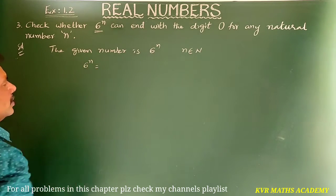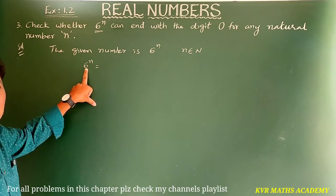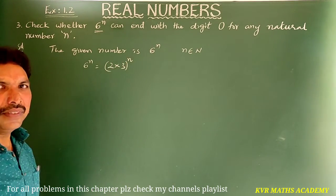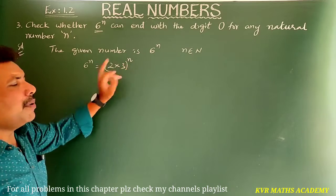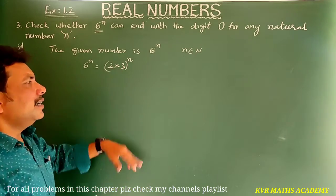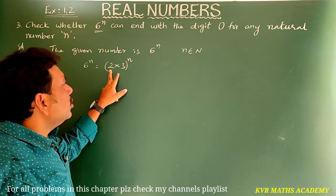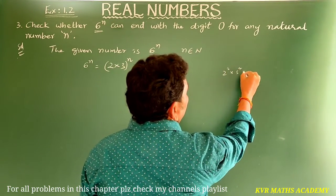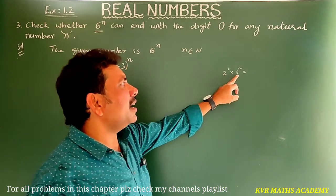Solution: the given number is 6 power n. Six can be written as the product of prime numbers: 2 into 3. So 6 power n equals (2 into 3) whole power n, which is 2 power n into 3 power n. Whatever power you take, the unit's digit cannot be zero.